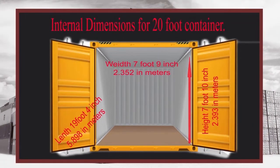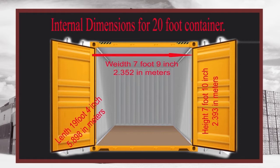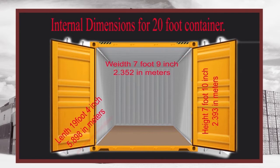Internal dimensions of the 20 foot dry van container: height 7 foot and 10 inches, 2.393 meters; width 7 foot 9 inches, 2.352 meters; length 19 foot 4 inches, 5.898 meters.